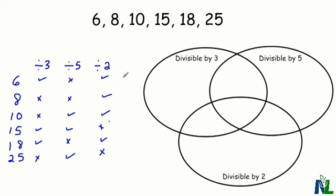First, let's look at the number six. Six is divisible by both three and two, so it's going to go in this section here. Eight is divisible by two and nothing else, so it goes here. Ten is divisible by both five and two, so we're going to put it in this overlap section.